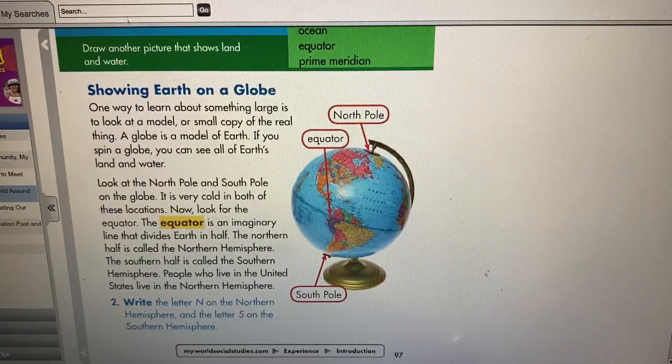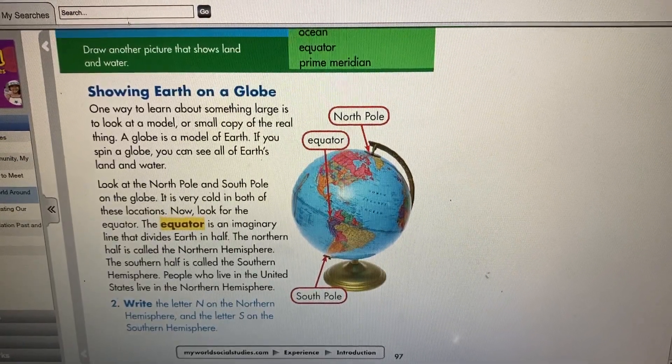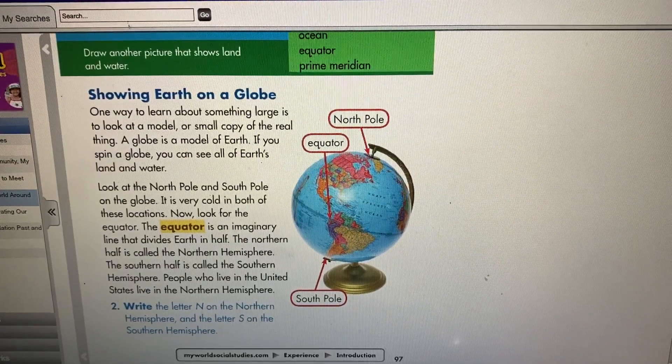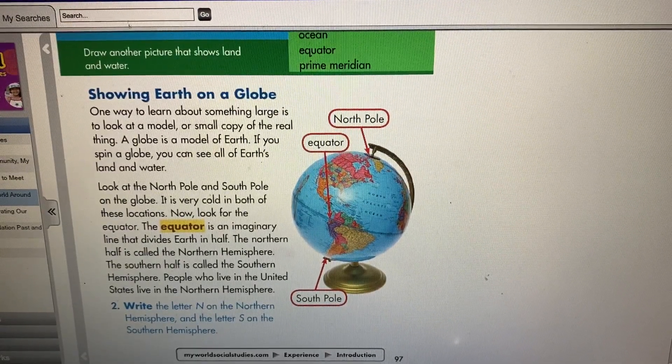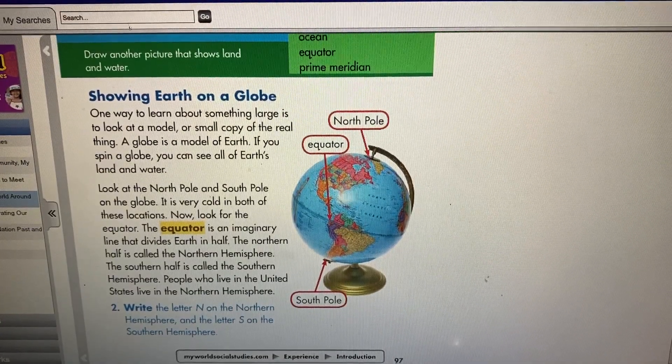Showing Earth on a globe. One way to learn about something large is to look at a model or a small copy of the real thing. A globe is a model of Earth. If you spin a globe, you can see all of Earth's land and water.